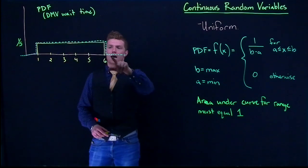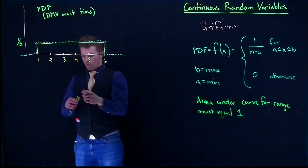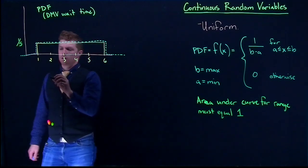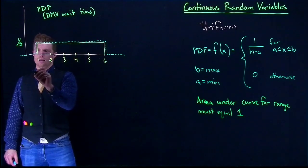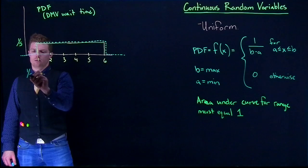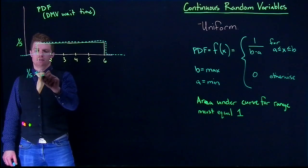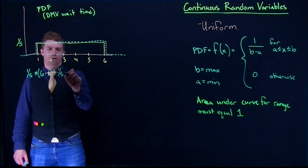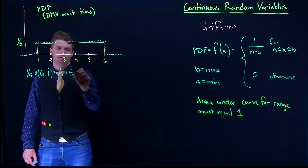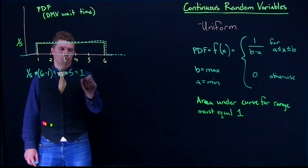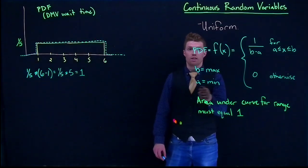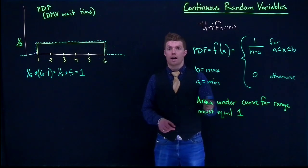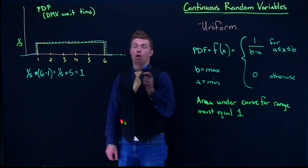To figure out the area of our uniform distribution, all we have to do is take our height multiplied by our base. So to find the area of this guy, we could say something like 1 fifth multiplied by 6 minus 1 equals 1 fifth multiplied by 5, which equals 1. So we fulfilled this requirement. And this is a requirement for all of our PDFs.